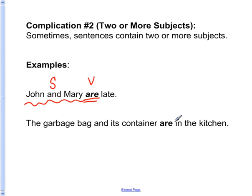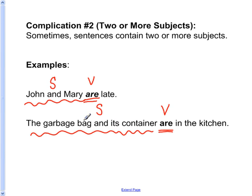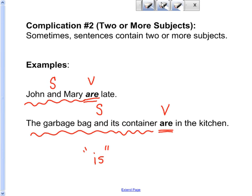The garbage bag and its container are in the kitchen. Same thing. The verb is are, and the subject of this sentence is garbage bag and container. It's a plural subject, so the verb form must agree with the plural subject. The verb form that agrees with the plural subject is are — not is, because is is the form of the verb to be that agrees with the singular subject.